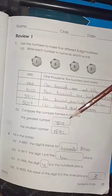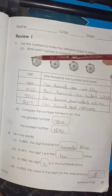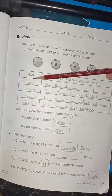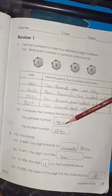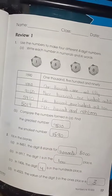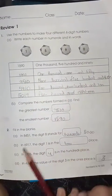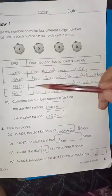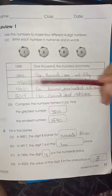Compare the numbers formed in A and find the greatest. Which one is the greatest? Here you can see which number is greater. The greatest number is 9510. And the smallest number from these numbers is 1590.